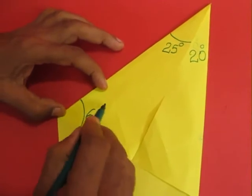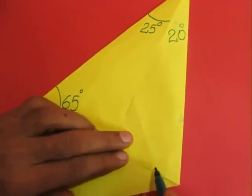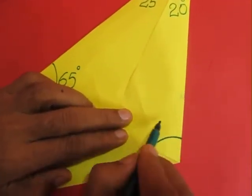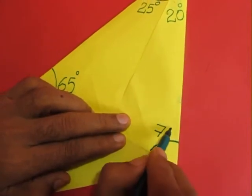Similarly for the right hand triangle, one angle is 20 and the other is 90. So this angle has to be 70 degrees.